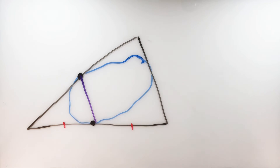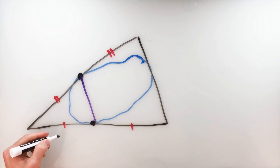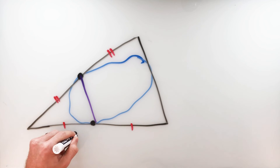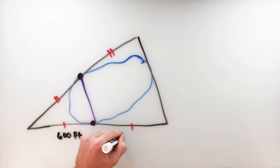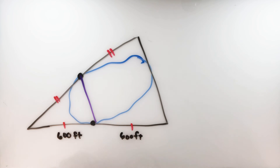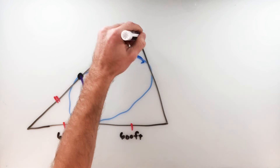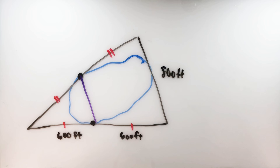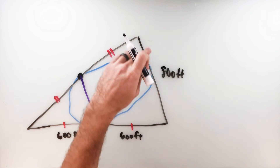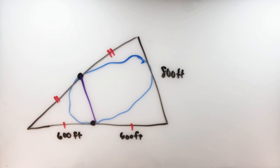Since we can measure distances around the lake, we get some numbers. A midpoint divides a segment in half, so the two half-segments on each side are equal. Let's say one full side measures 600 feet each half, and the third side of the triangle — the one the mid-segment is parallel to — measures 800 feet. By the mid-segment theorem, the bridge distance is half of 800, which is 400 feet. That's the distance across the pond.